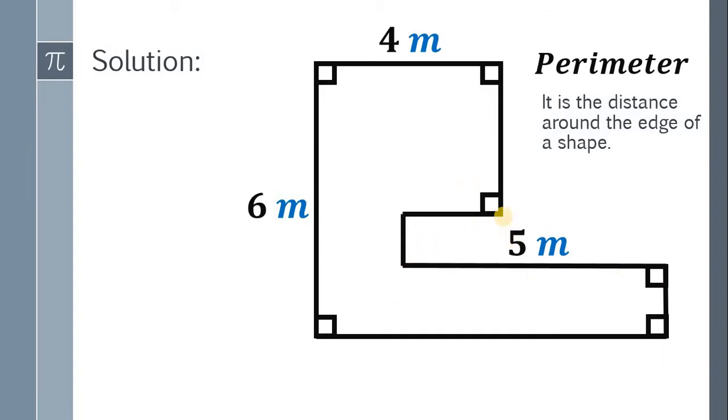At first glance, this question is impossible because we don't have enough given. The given is this side, this side, and this side. We have 4 meters, 5 meters, and 6 meters, and we don't have any measurements to the other sides. But this question is answerable.